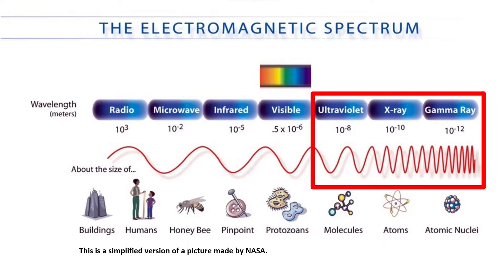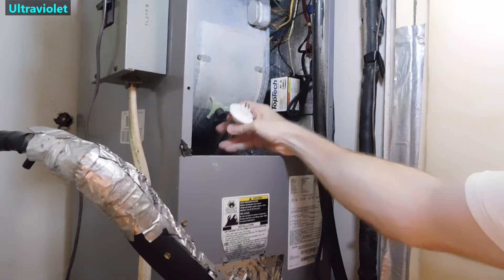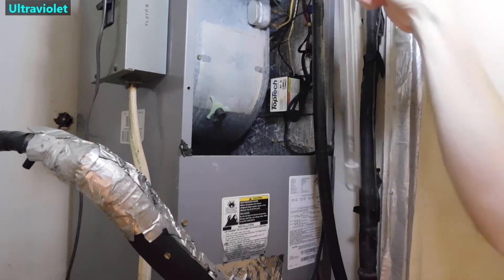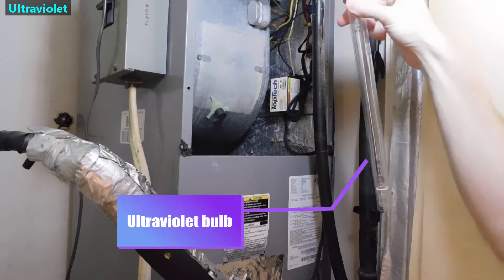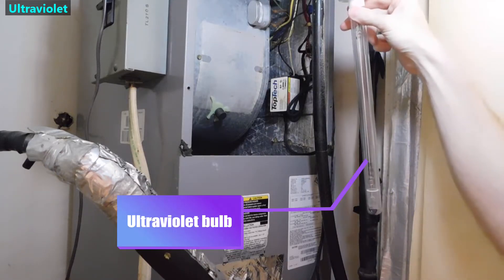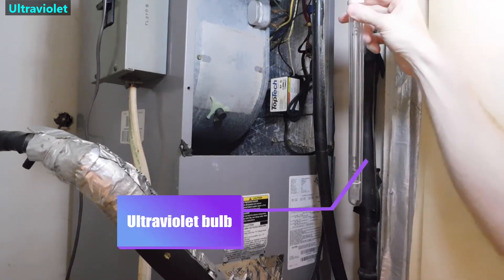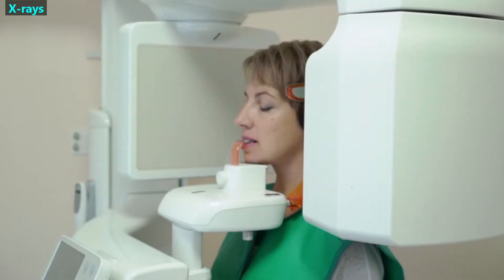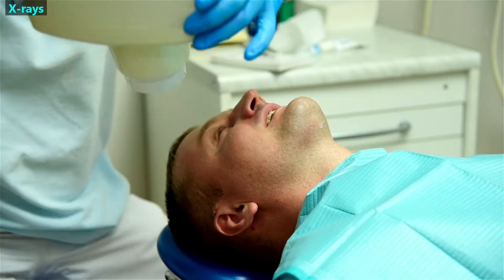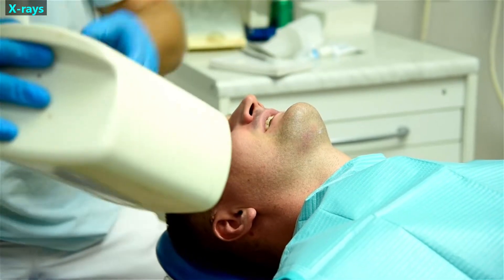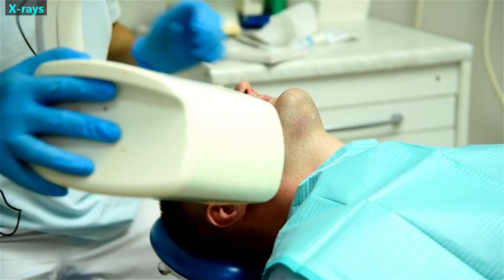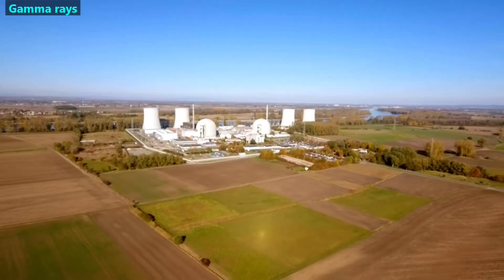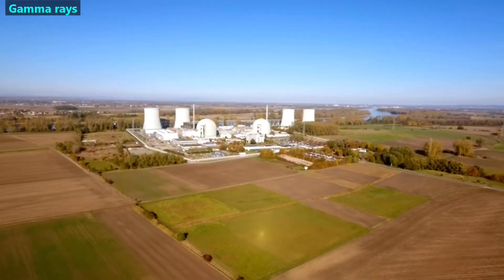We commonly use these as follows. We use ultraviolet waves inside our air ducts to kill harmful organisms circulating in the air, such as viruses. We use x-rays in medical imaging, such as getting an x-ray to show the condition of our bones and teeth. And we produce gamma rays in nuclear power plants.